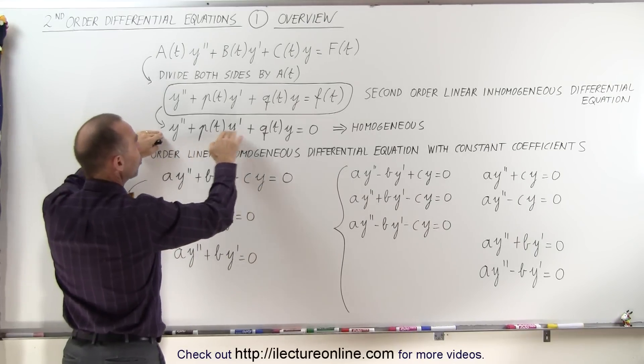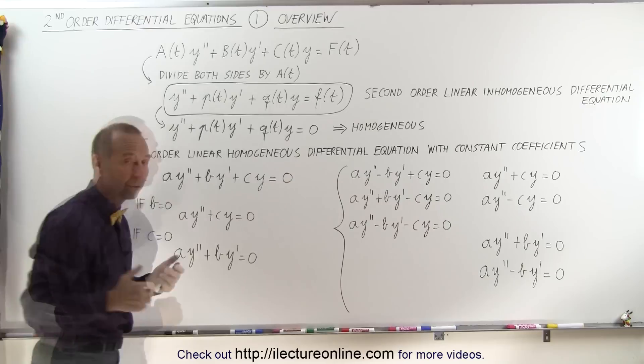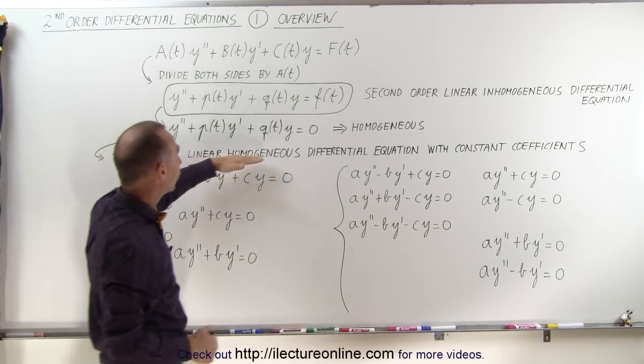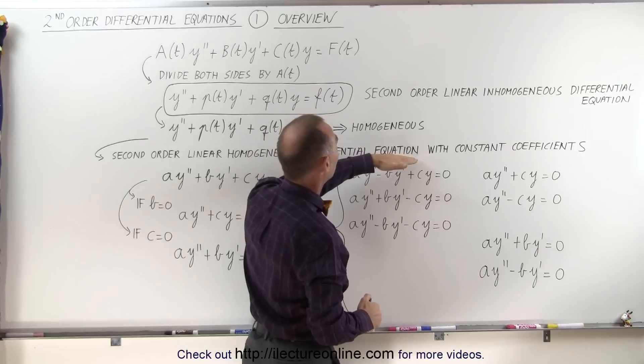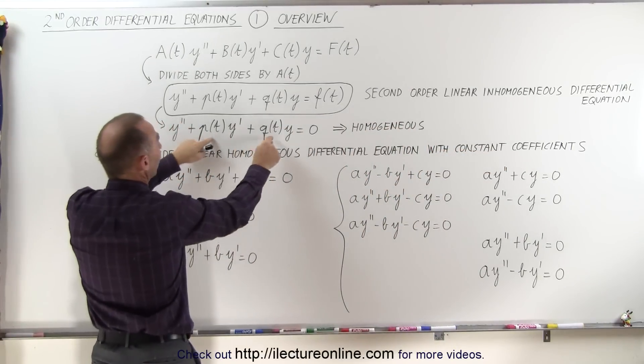So instead of having functions of t in front of y prime and the y, we simply have constants. And so this is now called a second-order linear homogeneous differential equation with constant coefficients instead of functions of t.